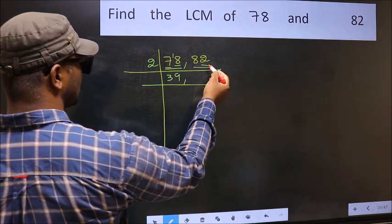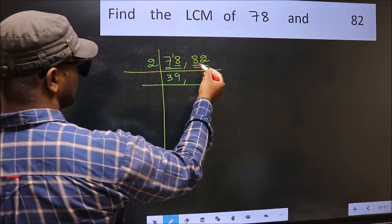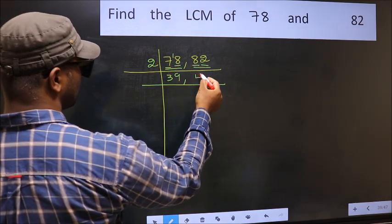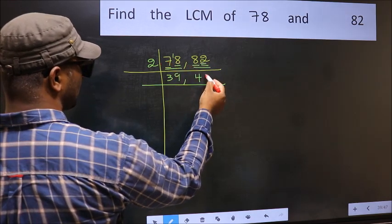The other number, 82. Last digit 2, even, so this is divisible by 2. First number, 8. When do we get 8 in 2 table? 2 fours, 8. The other number, 2. When do we get 2 in 2 table? 2 ones, 2.